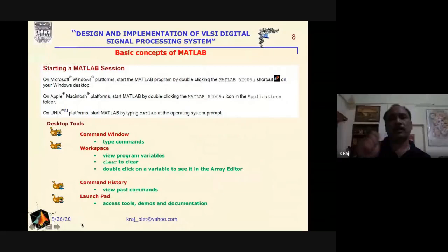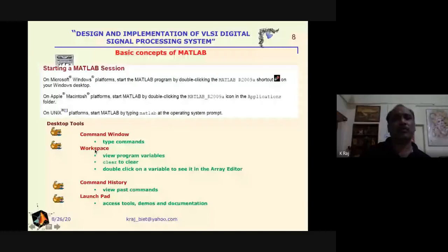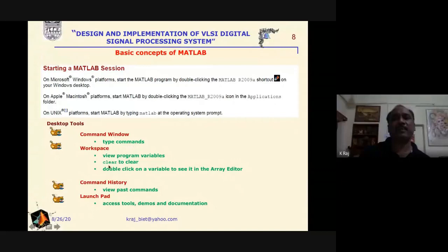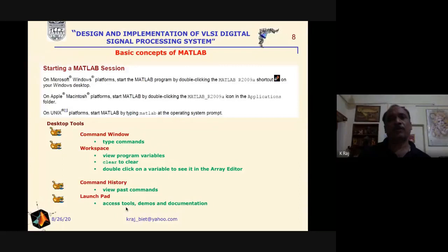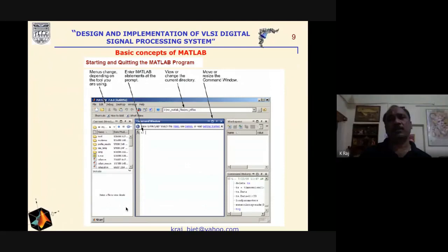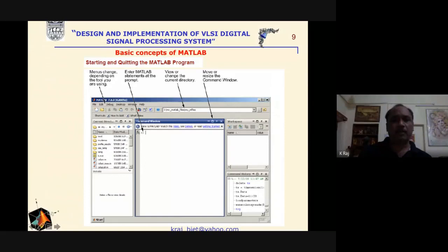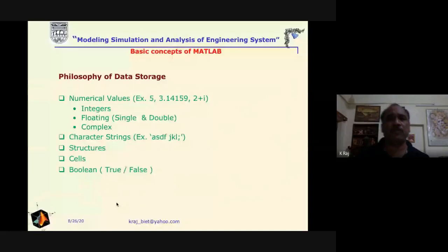When you double-click the MATLAB icon, by default you will find four windows: the Command Window, Workspace, Command History, and Launchpad. In the Command Window you type commands; the Workspace shows program variables, and you can double-click a variable to see it in the array editor. Command History shows past commands, and Launchpad provides access to tools, demos, and demonstrations.